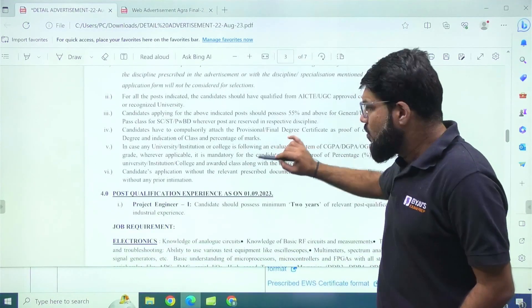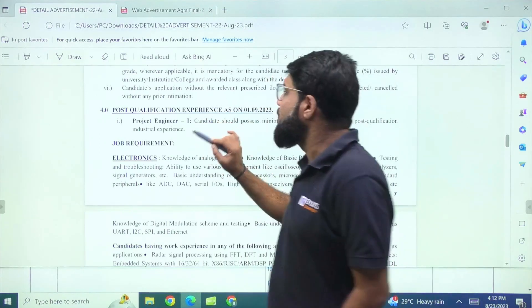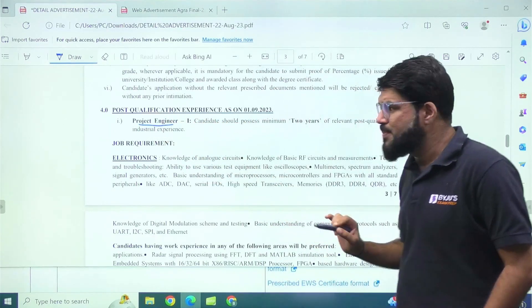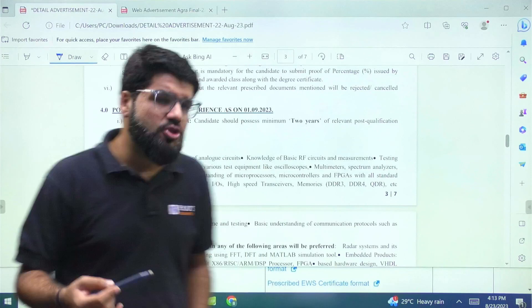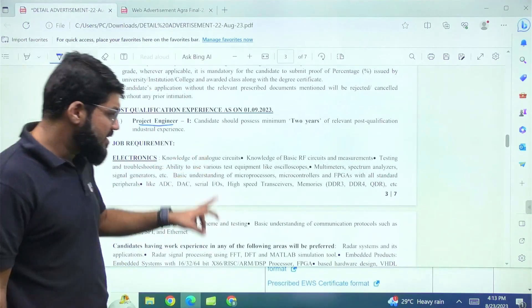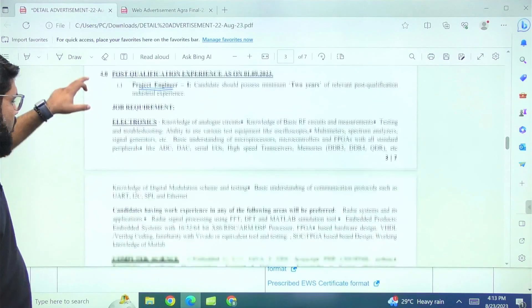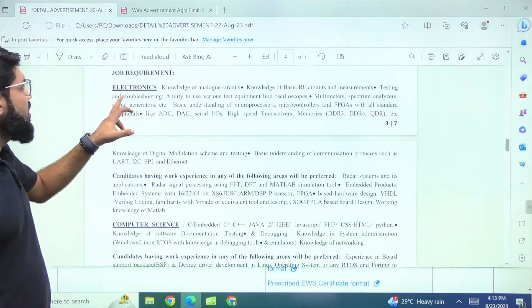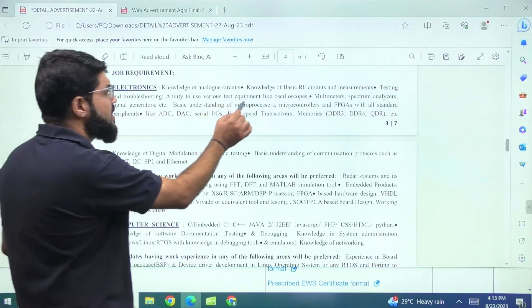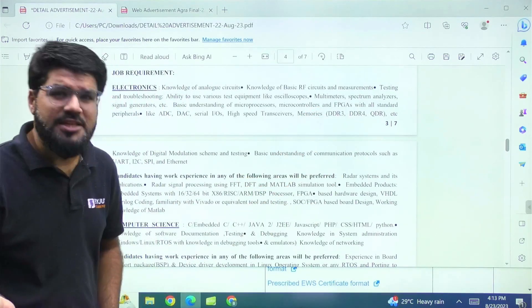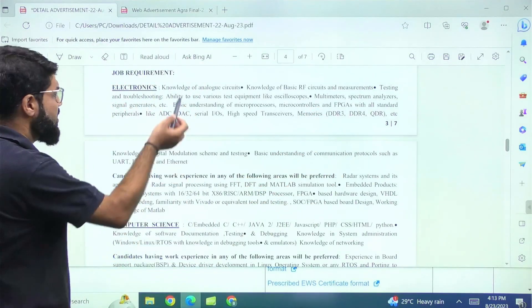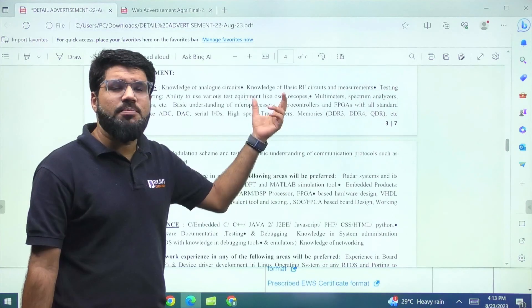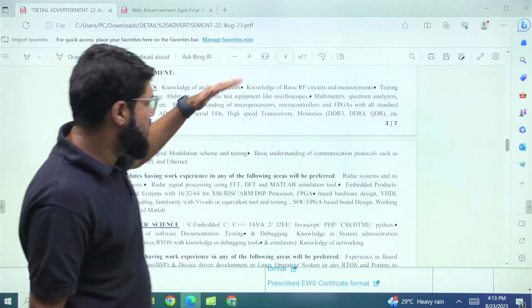Now, what is again important is those who are looking to apply for project engineer, as I told you project engineer is going to require two years of work experience. So what is the knowledge that is required? What is the job requirement? What is the area that you should be having? It's clearly mentioned. So you can even go through that also, like electronics, definitely must be having the knowledge of analog circuit, which is fundamental. Other than that, RF circuits measurement testing and troubleshooting ability to use various test equipment like oscilloscopes, multimeters. This is pretty much expected if you're being selected as electronic engineer. So there are several tools and several requirements mentioned. And that is why this is the post for those who have work experience because they work on this.